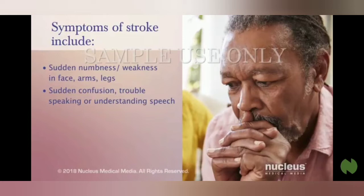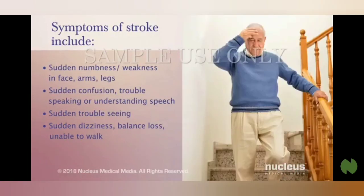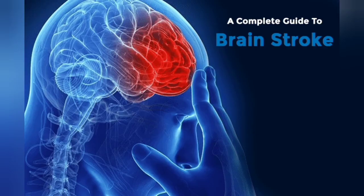It's important to know the signs and symptoms of a stroke: a sudden numbness or weakness in the face, arms, or legs; sudden confusion or trouble speaking or understanding speech; sudden trouble seeing in one or both eyes; sudden dizziness, loss of balance, or being unable to walk; and a sudden severe headache.